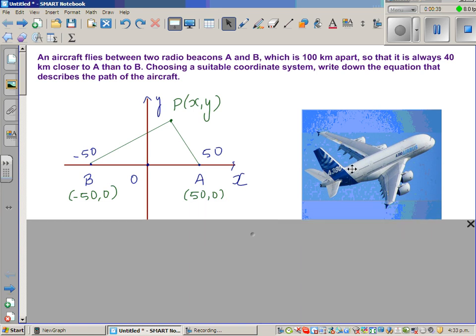This is an aircraft flying at the path. I've drawn X and Y axis. Point A is (50, 0) and B is (-50, 0), so the distance between A and B, which are the radio stations or radio beacons, are 100 kilometers apart.